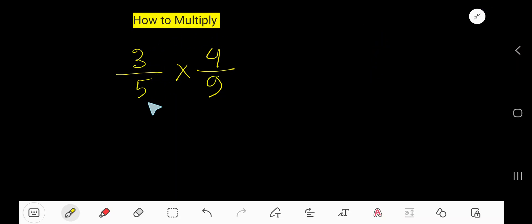How to multiply 3/5 times 4/9. That is, we need to multiply 3/5 fraction by another fraction 4/9. So to multiply a fraction by another fraction, just multiply the top numbers together and then bottom numbers together.